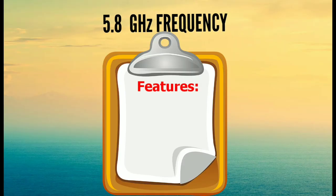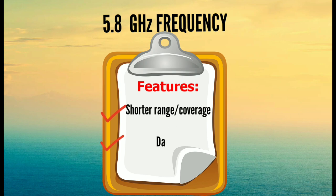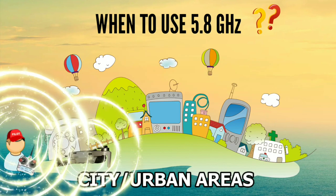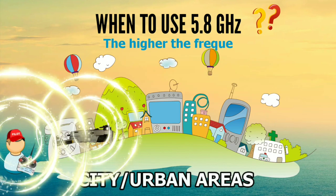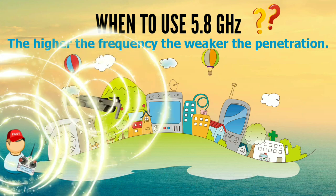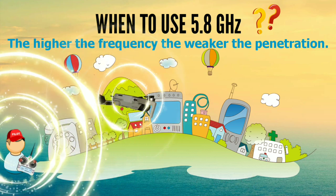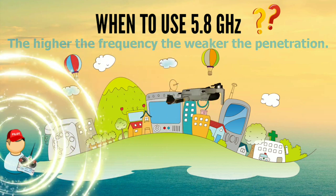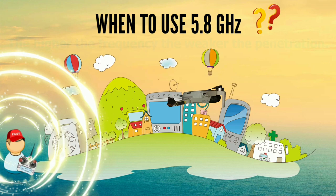Now it's on to the 5.8GHz frequency. Its features are: it has a shorter range of coverage and data travels much faster. If you're living in an urban area filled with buildings and a lot of electrical interference, this frequency will give you a stronger connection even in areas where there's a lot of interference.